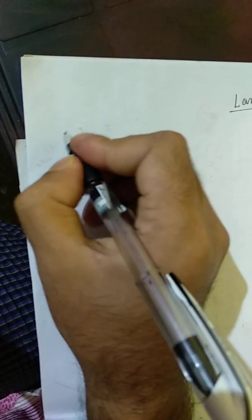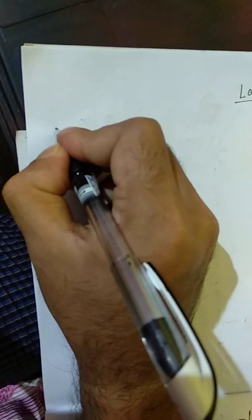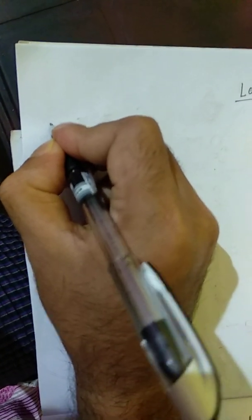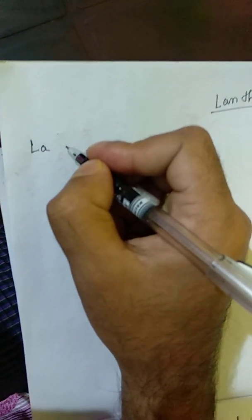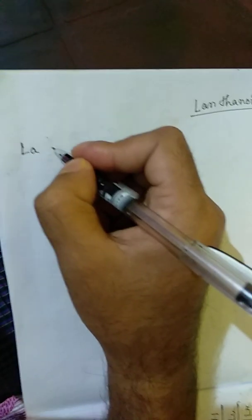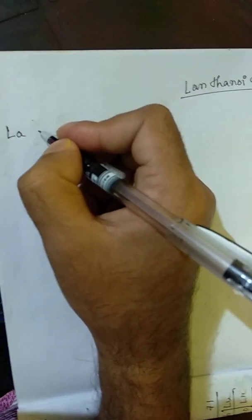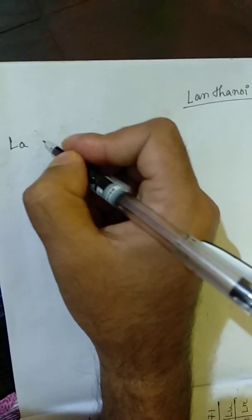The lanthanoid series — the first element of the lanthanoid series. The symbol for lanthanum is La, so it's called lanthanum. Please note the name from here.